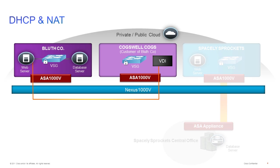As often happens in a cloud environment, these tenants may be built on templates, and so for ease of deployment they might have the same IP address space. This is usually fine, but it may cause a problem if the two tenants need to communicate with each other. For example, Cogswell Cogs is a customer of Bluthco and needs to access their software as a service using their virtual desktops. With the ASA 1000v, this isn't a problem. The ASA 1000v provides DHCP capabilities to the virtual desktops so they can be easily spun up and deployed, and then provides NAT capability between the two tenants so that even though the virtual desktops and the web servers might have the same IP address space, they can still communicate.